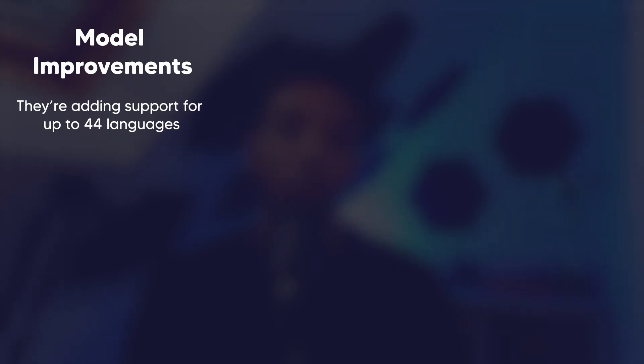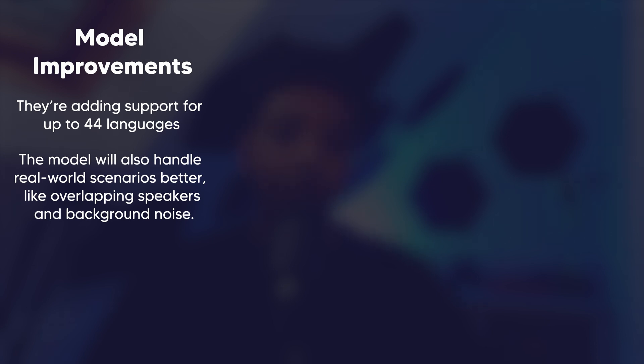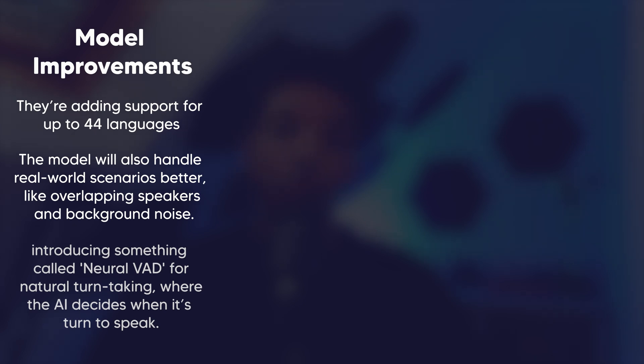Before we get into the demo, I want to quickly cover some of the things that UltraVox has in the pipeline. I had a chance to speak with the founder of UltraVox and here are some amazing updates they have planned for this year. They're working on three main areas. The first is model improvement — they're adding support for up to 44 different languages, and by the time this video is out that should be available. They're also working to improve the model to handle real-world scenarios like overlapping speakers and background noise, plus introducing Neural VAD for voice activation detection for more natural turn-taking where the AI decides when it's its turn to speak, just like humans do.